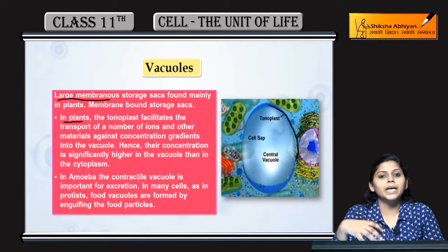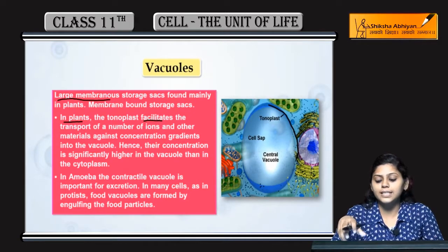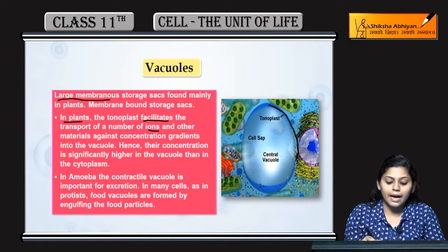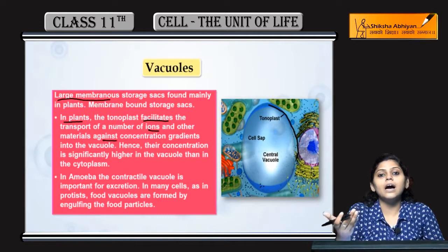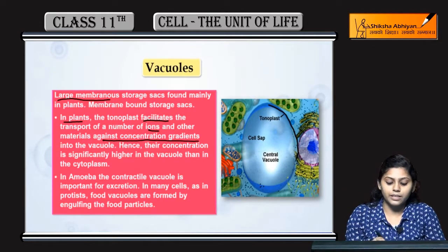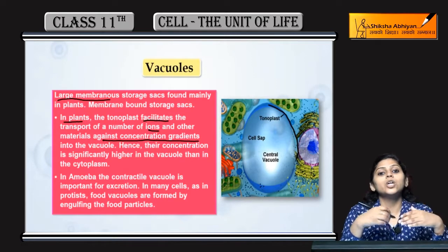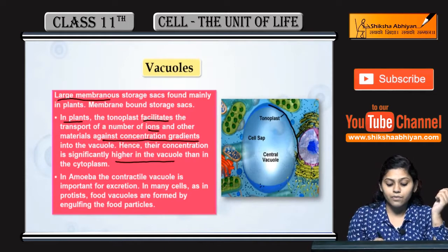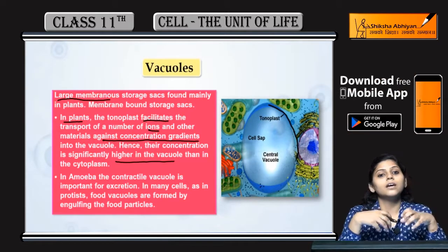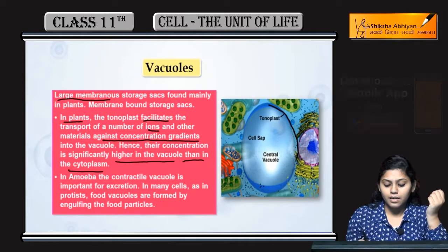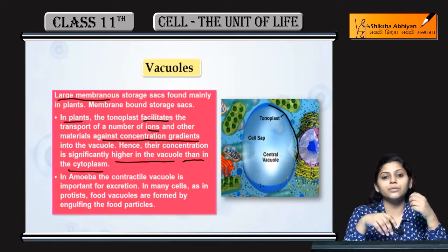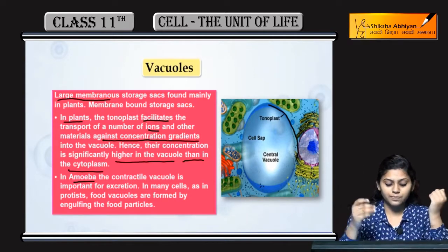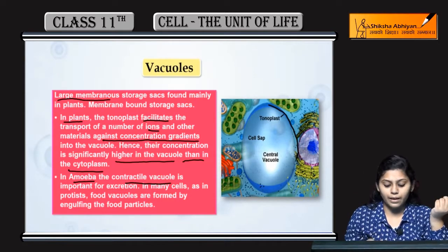Vacuoles ki membrane aap keh saktay hain tonoplast hoti hain, like plasma membrane. Tonoplast facilitate karthay hain transport of ions and materials against the concentration gradient — lower concentration se higher concentration ki taraf. Is wajay se vacuoles mein concentration higher hoti hain as compared to cytoplasm. Amoeba mein hoti hain contractile vacuoles.